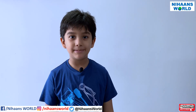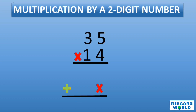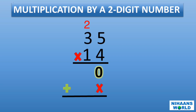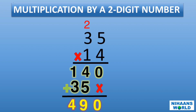Friends, let us learn multiplication by a two-digit number. Here we are multiplying 35 by 14. We start with the first digit of the multiplier, which is 4, and multiply each digit. 4 fives are 20, so we write 0 here and 2 in the carry over position. 4 multiplied by 3 is 12, and 12 plus 2 is equal to 14. Then 1 five is 5, and 1 three is 3. To find the final answer, we do addition: 0 plus 0 is 0, 4 plus 5 is 9, 1 plus 3 is 4. So 35 multiplied by 14 is equal to 490.